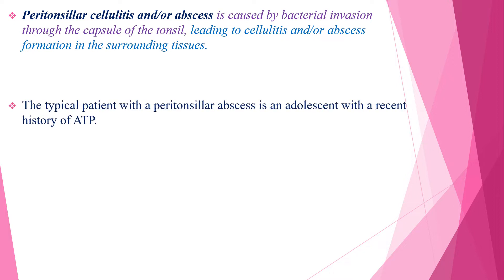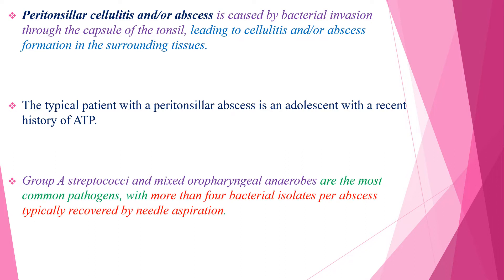The typical patient with peritonsillar abscess is an adolescent with a recent episode of acute tonsillopharyngitis. Group A Streptococcus and mixed oropharyngeal anaerobes are the most common pathogens, with more than 4 bacterial isolates typically recovered by needle aspiration. So most of the time it is polymicrobial.